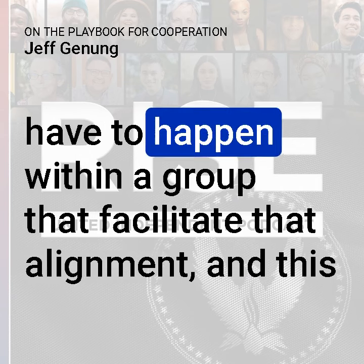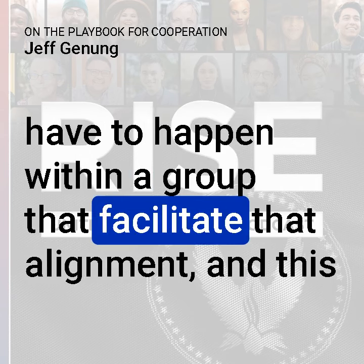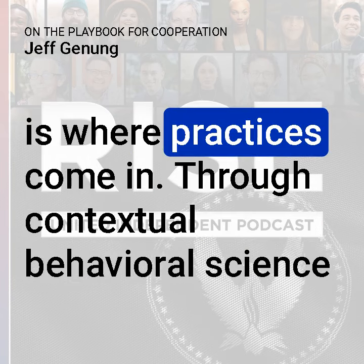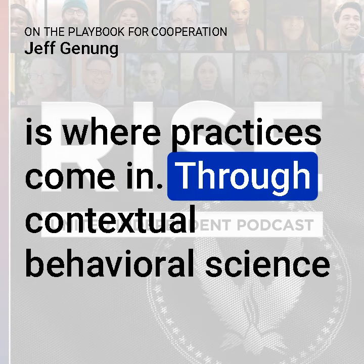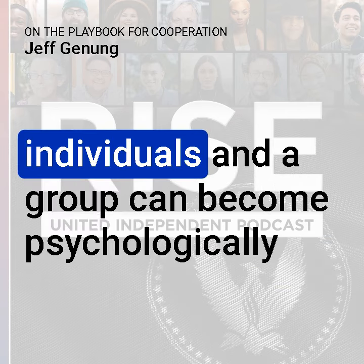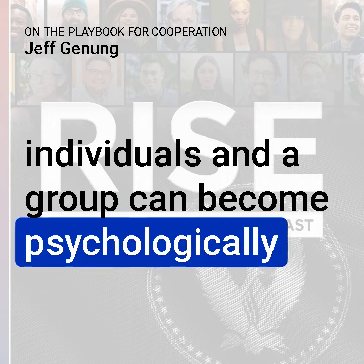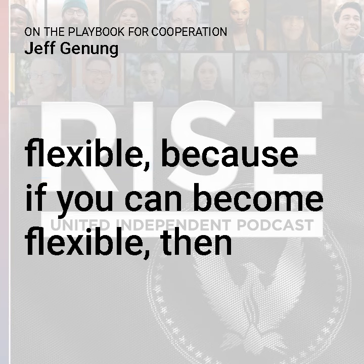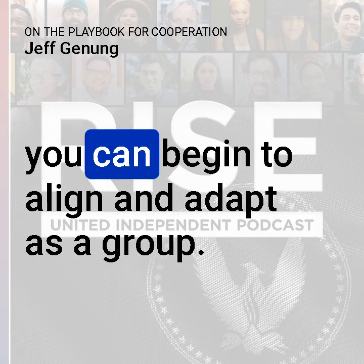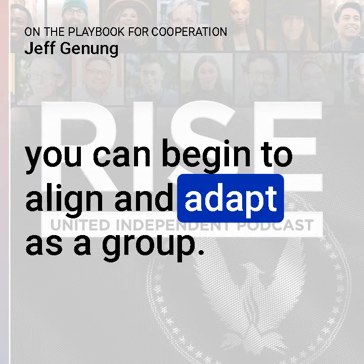But in order to align on a shared identity and purpose, there are things that have to happen within a group that facilitate that alignment. This is where practices come in through contextual behavioral science. Individuals and a group can become psychologically flexible, because if you can become flexible, then you can begin to align and adapt as a group.